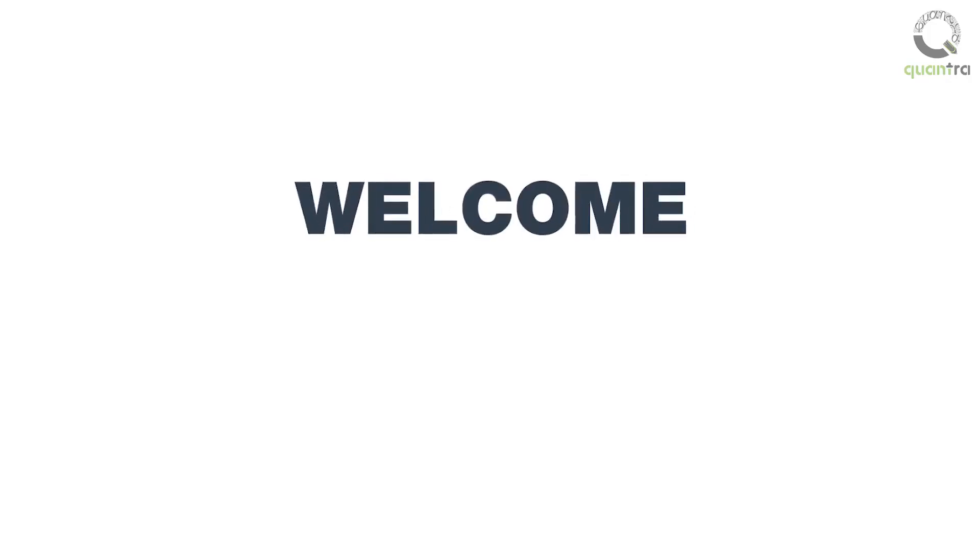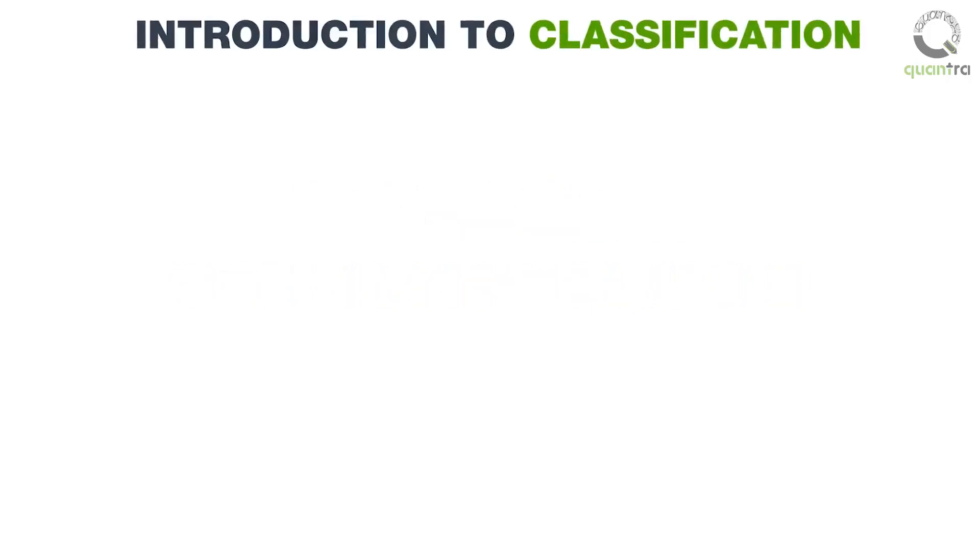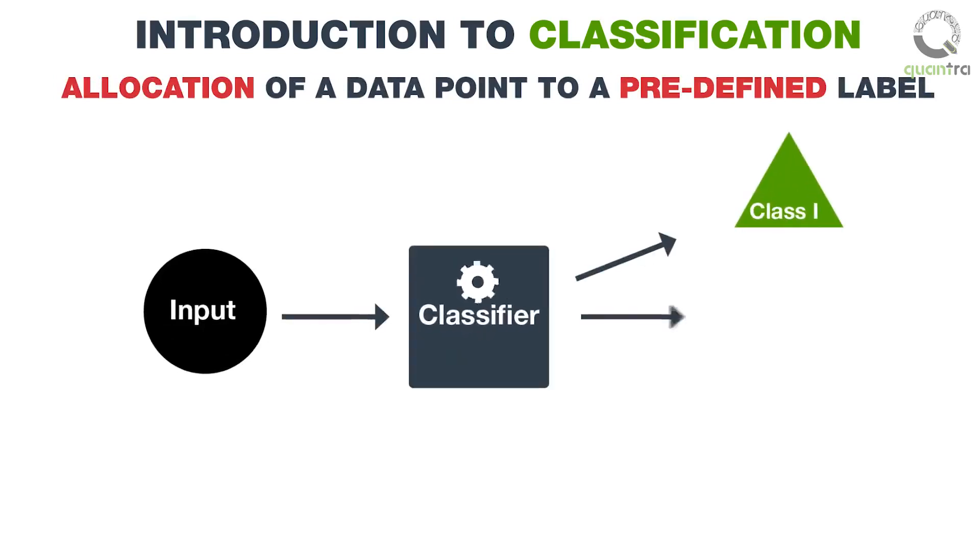Welcome to the video lecture. In this video, we will understand what classification is. Classification is an approach of machine learning, which involves the allocation of a data point to a predefined label. This involves taking an input and running it into a classification technique, or a classifier to map the input into a discrete class or category.